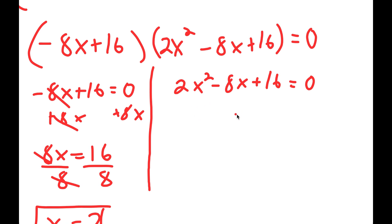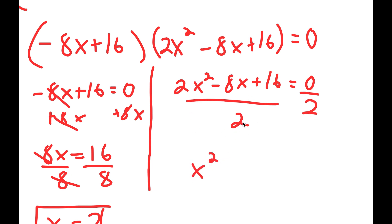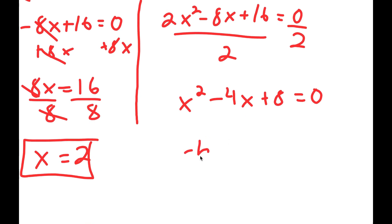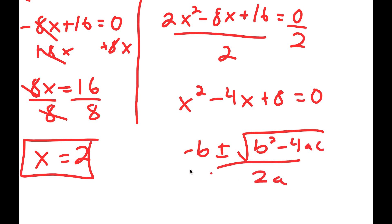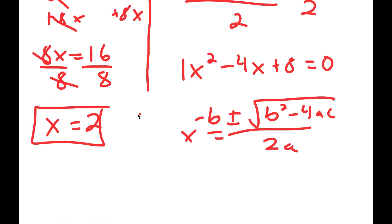Now for 2x squared minus 8x plus 16 is equal to 0, I'm going to divide both sides by 2. So 2x squared divided by 2 is x squared, negative 8x divided by 2 is negative 4x, and 16 divided by 2 is 8, so I have x squared minus 4x plus 8 equal to 0. If I have something in the form negative b plus or minus the square root of b squared minus 4ac over 2a, this is the quadratic formula, and we're going to use this. So in this case, a is 1, b is negative 4, and c is 8.